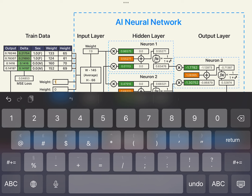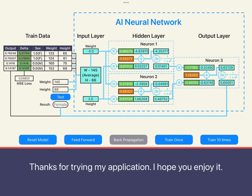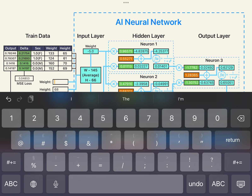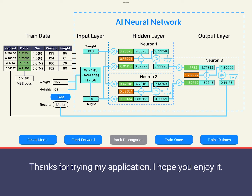Let's enter a set of height and weight data to see the predicted results. Our neural network can already implement the most basic classification function.